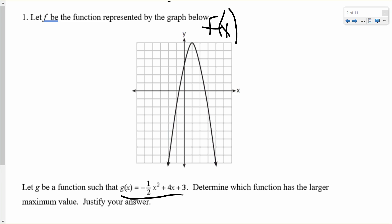Well, we're going to find the maximum value for each. For the graph, my maximum value is my turning point. So the maximum value is one, two, three, four, five, six. Now, when it says maximum value, it's talking about the y value of the turning point, the y value of the vertex.